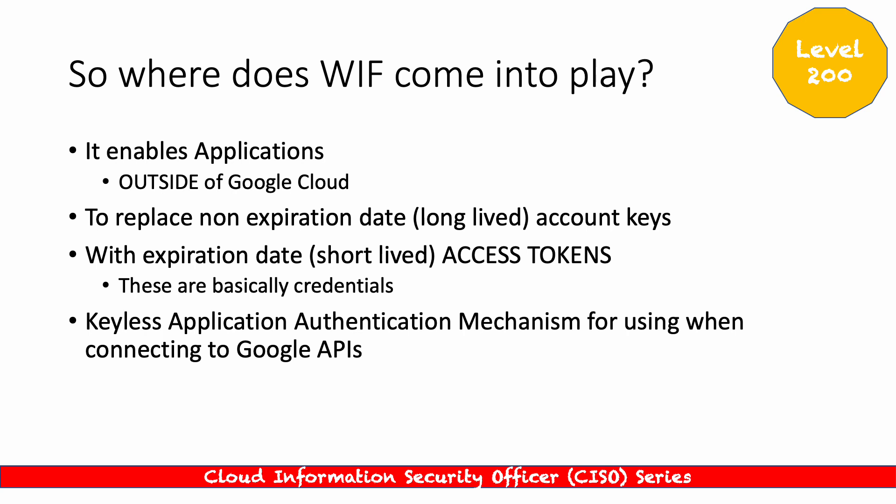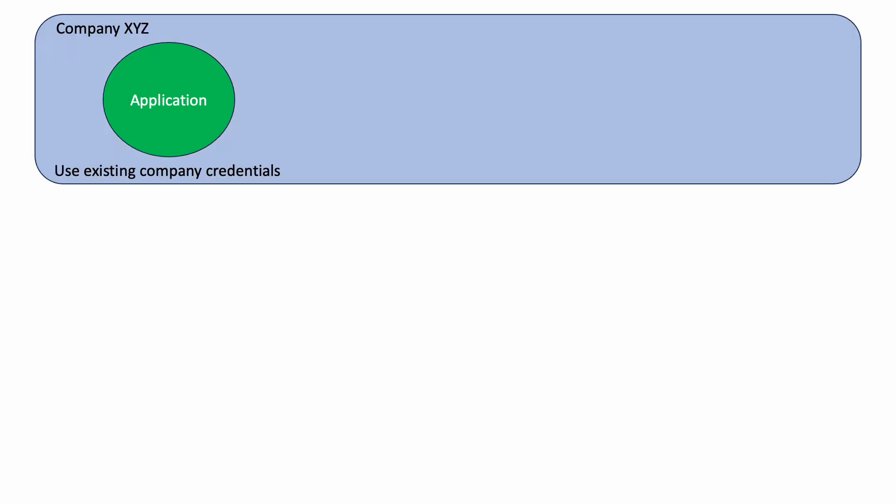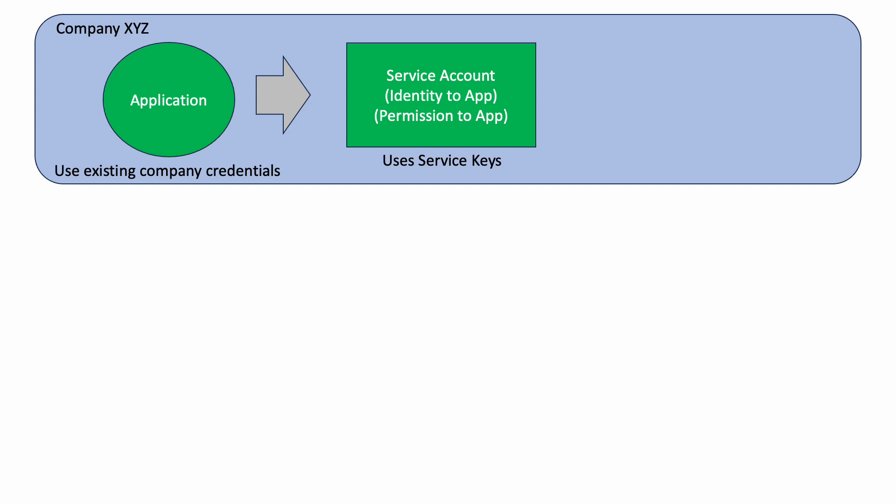Let's look at a scenario. We have an application belonging to a company using some company credentials. It accesses a service account, which provides an identity to the application and grants permissions. It uses service account keys to access Google Cloud resources. This model works perfectly fine when the applications are in Google Cloud, the service accounts are in Google Cloud, and the Google services being accessed are also in Google Cloud — a very simple solution.